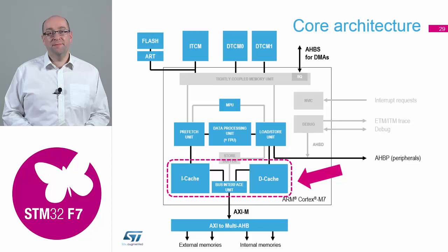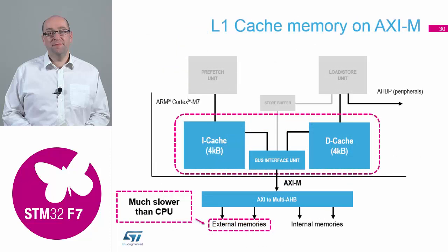The external memory bus matrix through the Axibus is interfaced to the core via the cache. Our ART accelerator is essentially a cache — it's a way of caching all the different instructions and loops inside the system, doing exactly the same effect as the caches we have here.